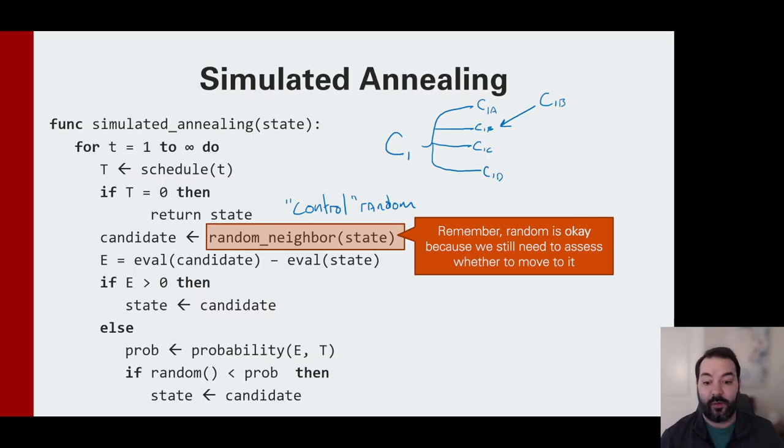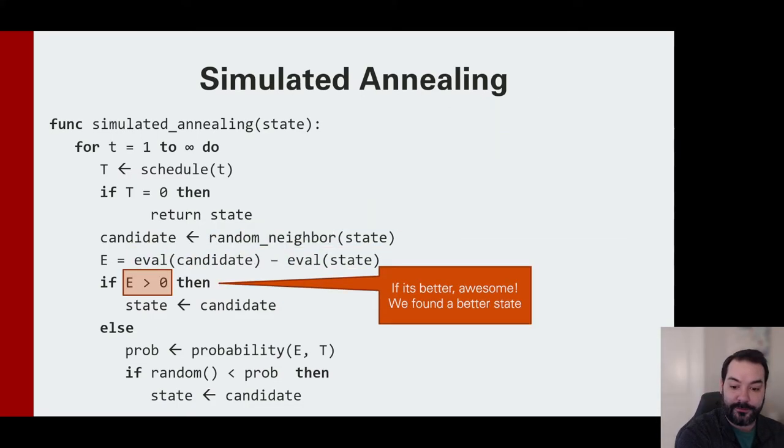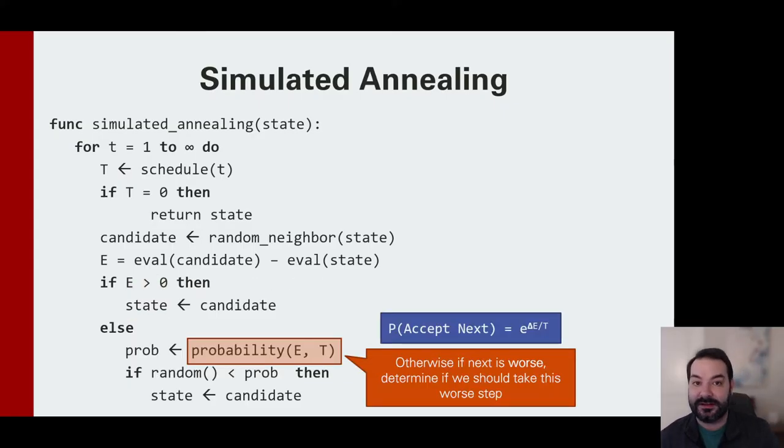Then what I do is I say, what is the delta E of that candidate? That would be the C1B minus C1, whatever the evaluation, the F score, the fitness measure of C1 was. Check the difference. If it's greater than zero, if we're trying to maximize, immediately go to it. We're done. Awesome. We're good.